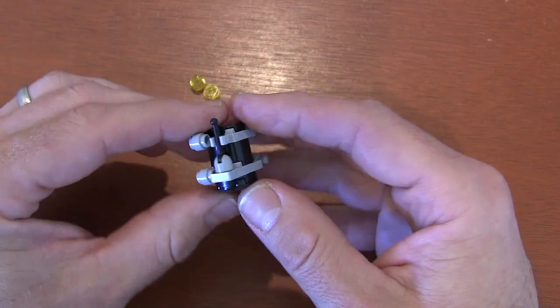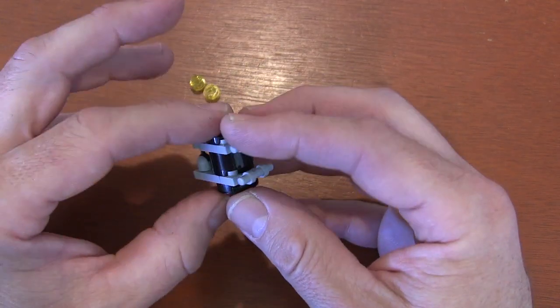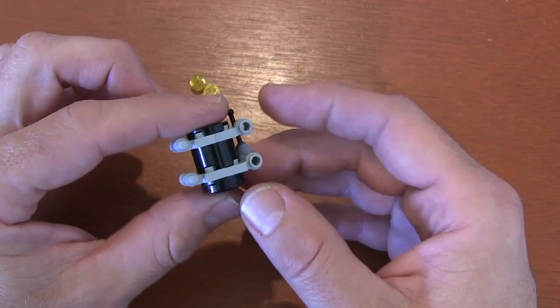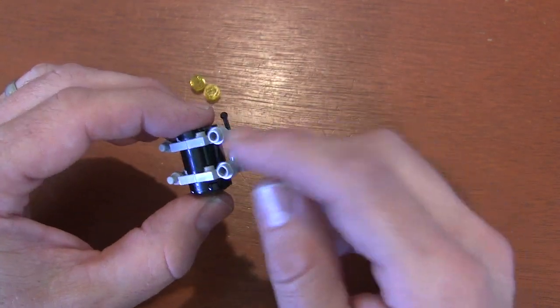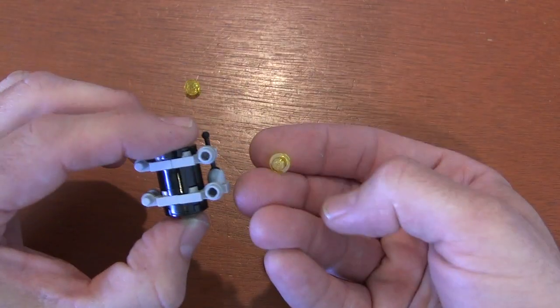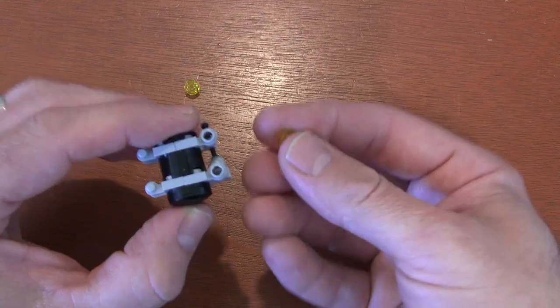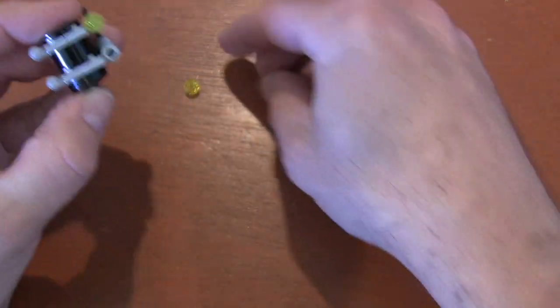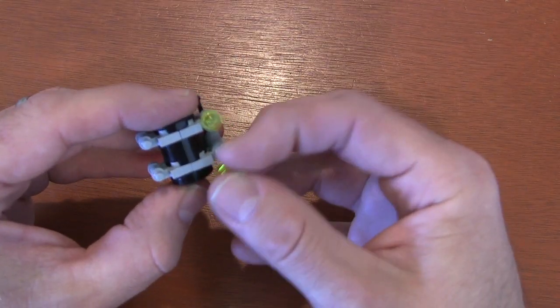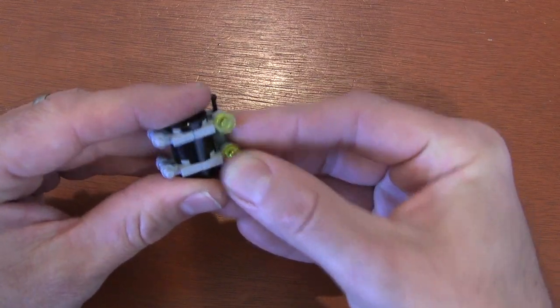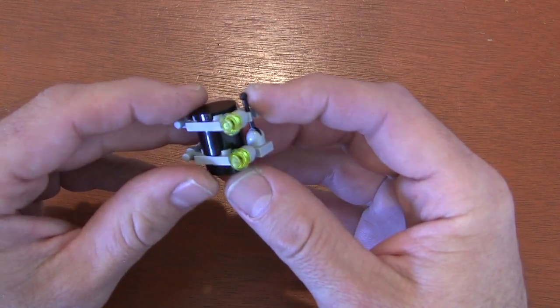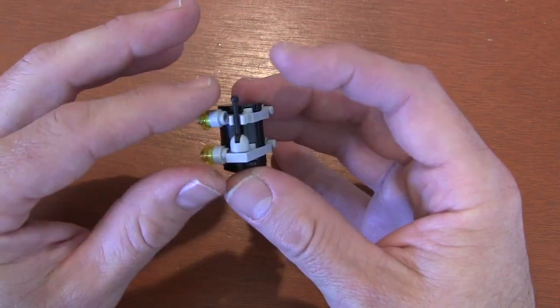The colors of these things are going to change based on the video game you're playing. I'm doing something similar to the Batman video game. And because of the Batman video game, I'm going to get these 1x1 round translucent yellow plates and put them on for the lights of our canister. But these colors all change based on what video game you're building your canister after. But here you have a minikit canister.